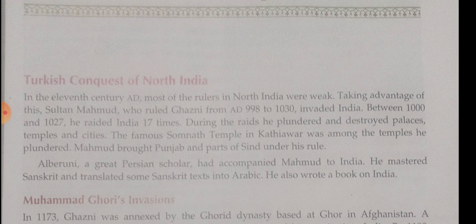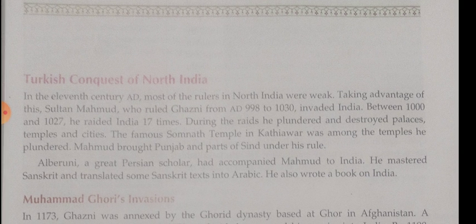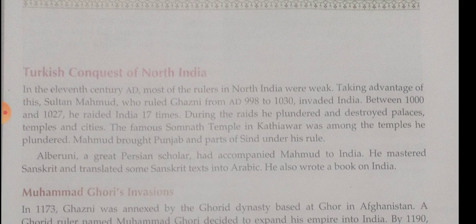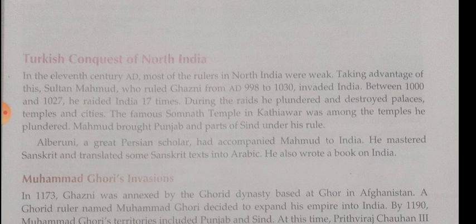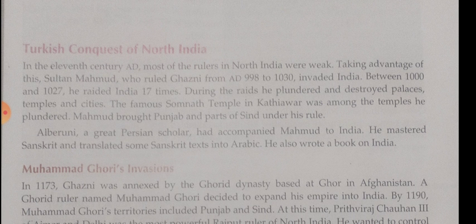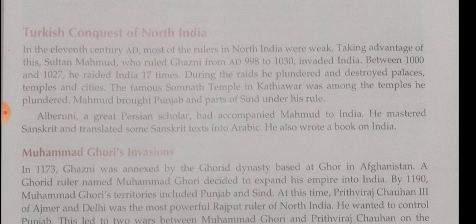In the introduction part we discussed about the Turkish conquest of North India. In the 11th century, many rulers of North India were very weak, and taking advantage of this, many invaders came to India, captured many parts, and made their own empires. First we discussed about Mahmud, the ruler of Ghazni. He invaded India 17 times, raiding and plundering the wealth of palaces, temples, and cities, and he destroyed many places.